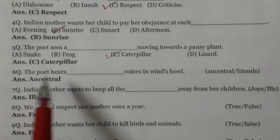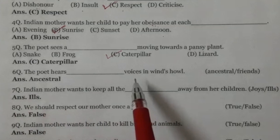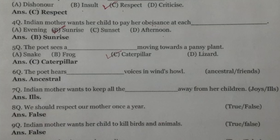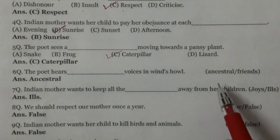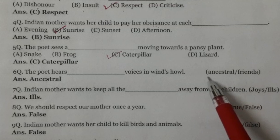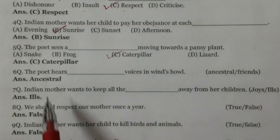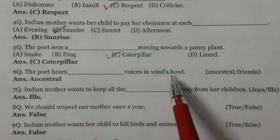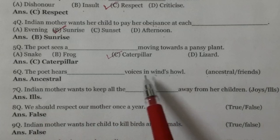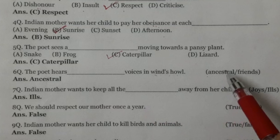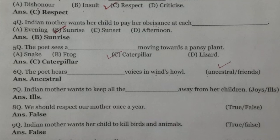Question number 6: The poet hears dash voices in wind's howl. Two options given: ancestral. Ancestral hunde ne purvaaj. The poet kehta hai ki jado tez hawa chaldi hai, ta us de vich wo apne purvajaani awaazaan sunda hai. The right option is ancestral.